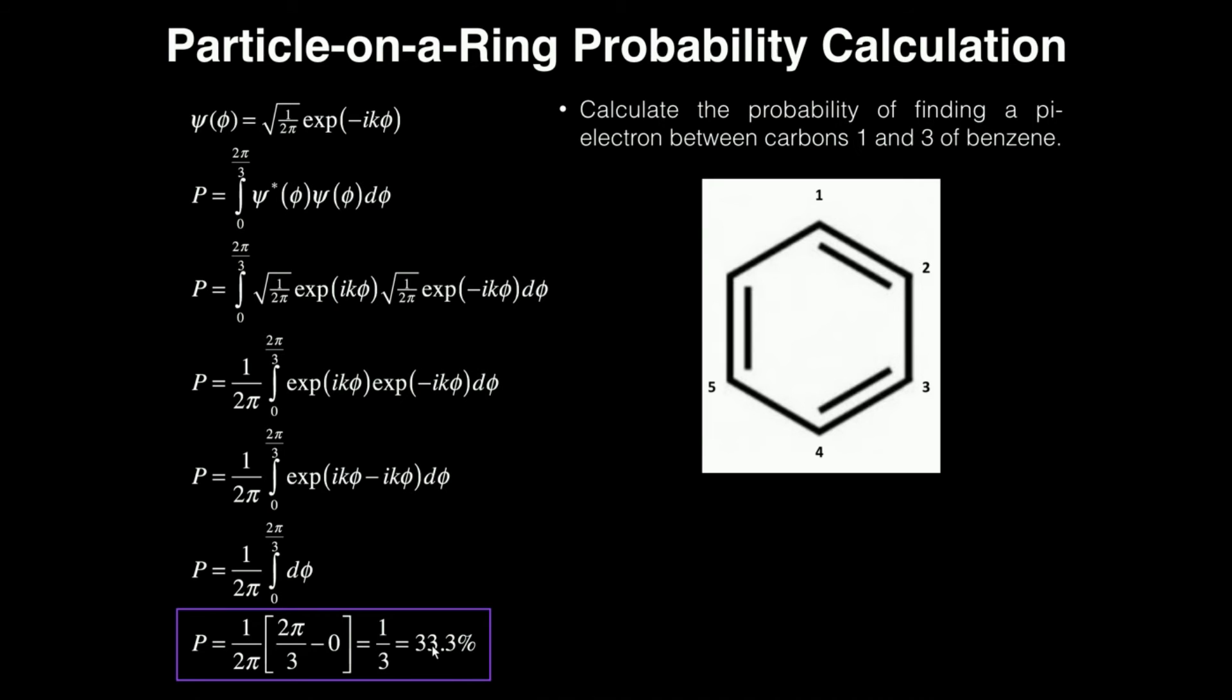Now let's think about it. What's the probability finding it between one and three? Well, it has to be one-third, right? Because this span of length of the ring, right, is one-third of it. So if I start from three and go to five, that's another third, that's two-thirds total, and five back to one, that's my last third, so three-thirds.